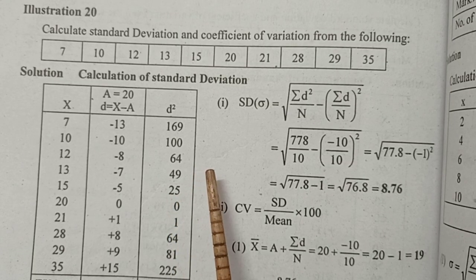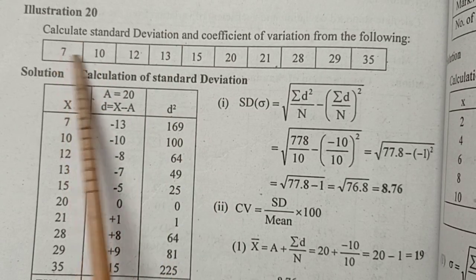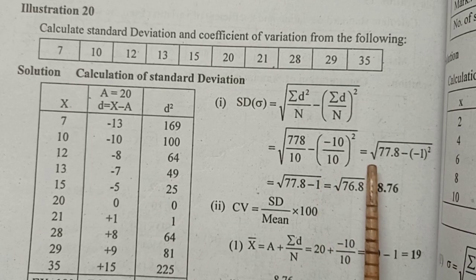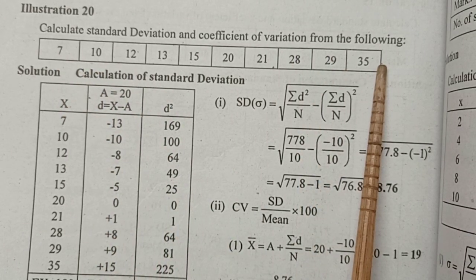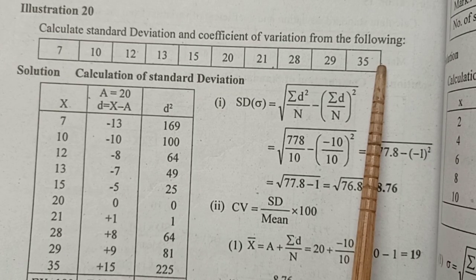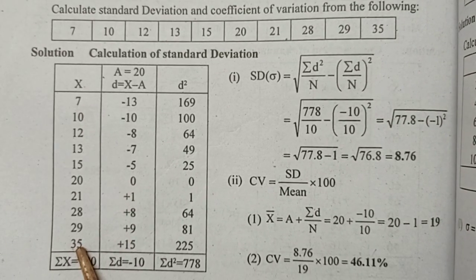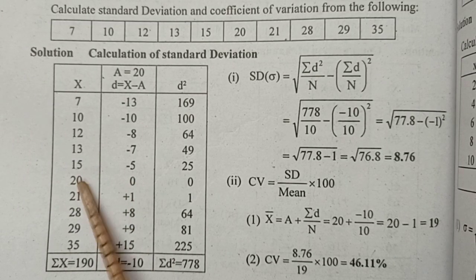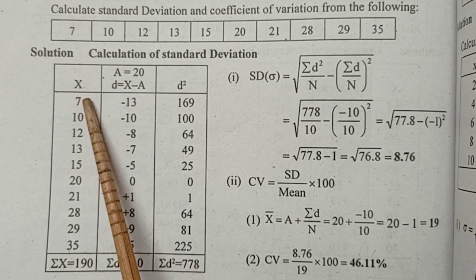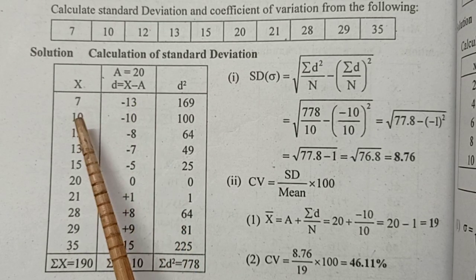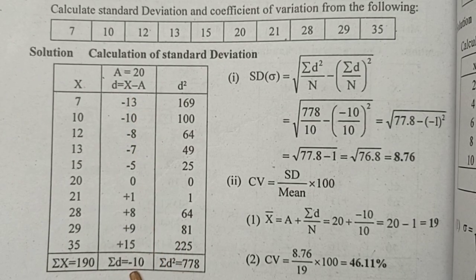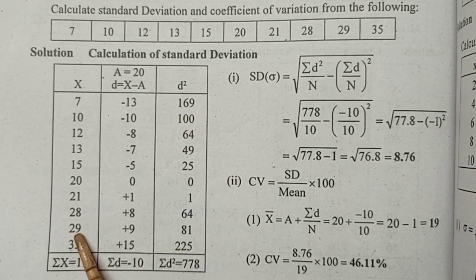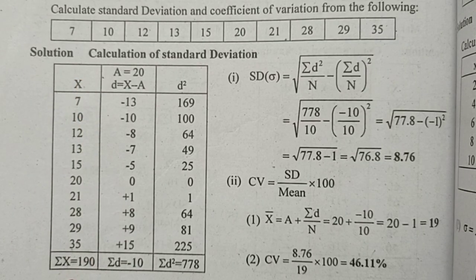Next method: the assumed mean method. Calculate the standard deviation using the assumed mean method. We take the assumed mean and set up the observation table. There are 10 observations, with a total of 190. We add 20 as the assumed mean, then compute x minus a: 7 minus 20 equals minus 13, 10 minus 20, and so on.